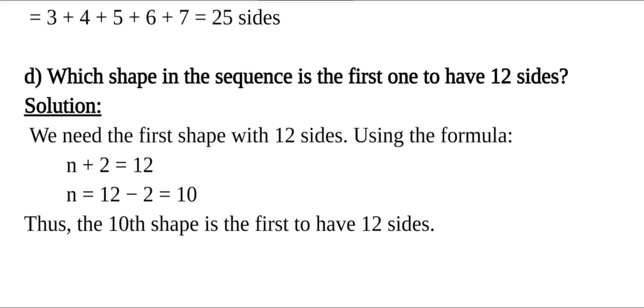Next, part D: Which shape in the sequence is the first one to have 12 sides? We need the first shape with 12 sides. Using the formula, n + 2 = 12. Then n, plus 2 goes to the right-hand side, it becomes minus 2. Then n = 12 - 2, that is equal to 10. Thus, n is 10, which means the 10th shape is the first to have 12 sides.